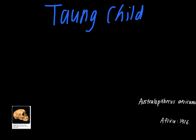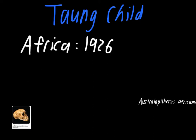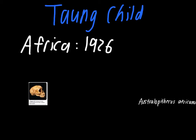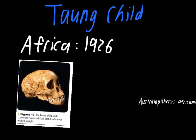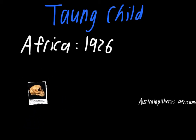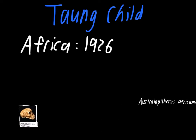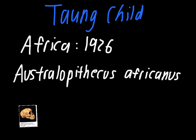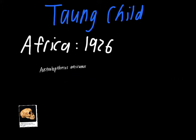The first fossil we're going to talk about is referred to as the Taung Child. This fossil was discovered in Africa in 1926, and it's not quite as complete as the next one we'll talk about, because it was really only just a skull that was found. The classification this one ends up being put into is Australopithecus africanus. So it was discovered in Africa and it's in the genus Australopithecus, so the name comes together and makes sense.